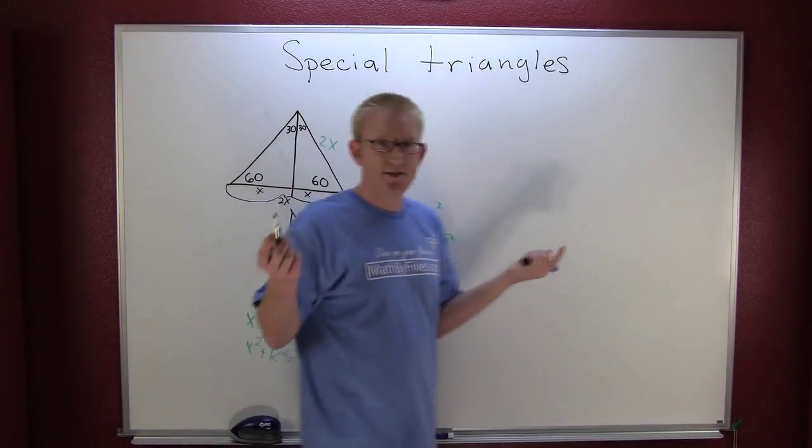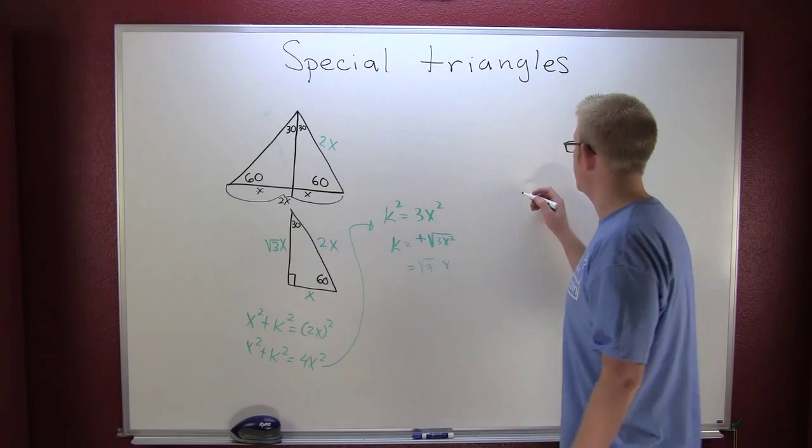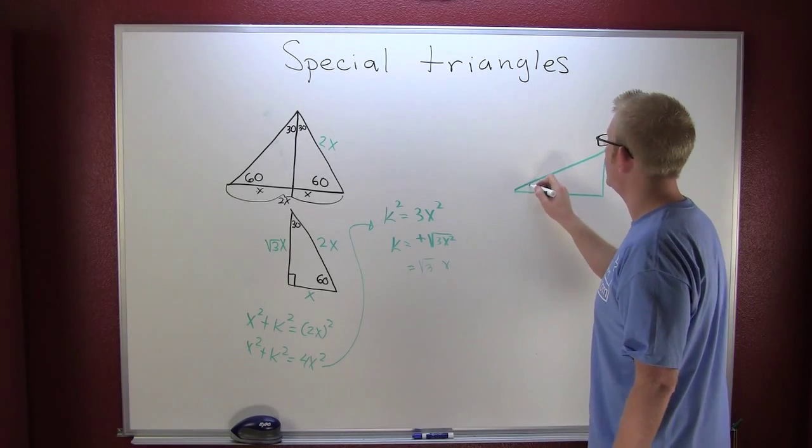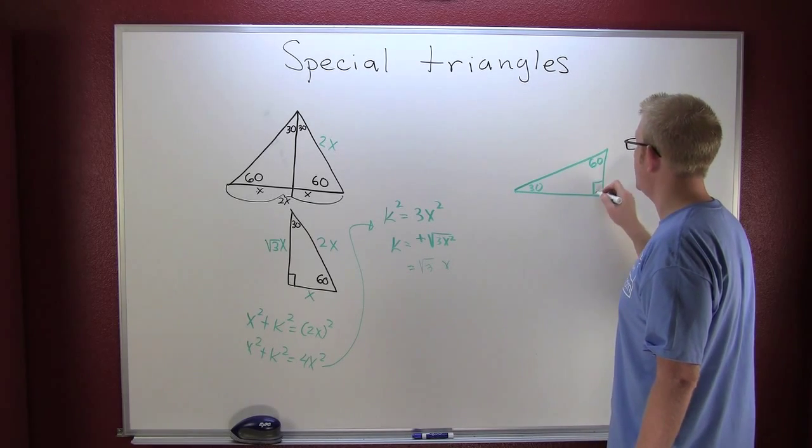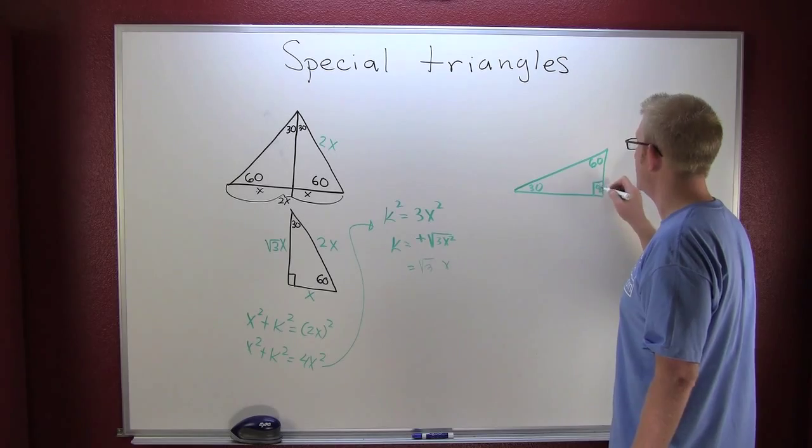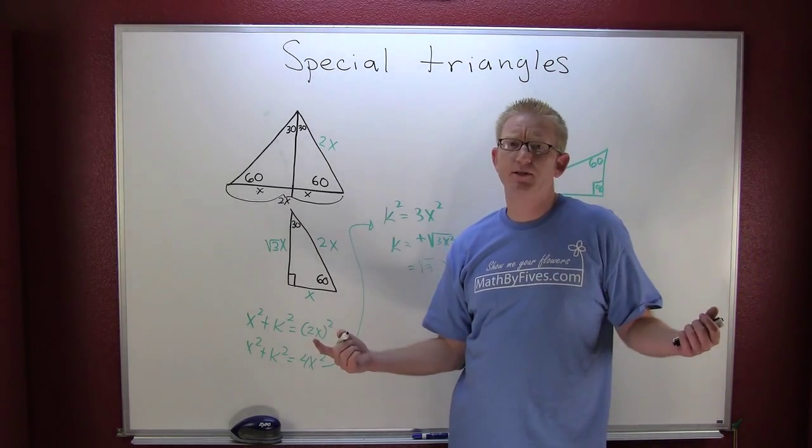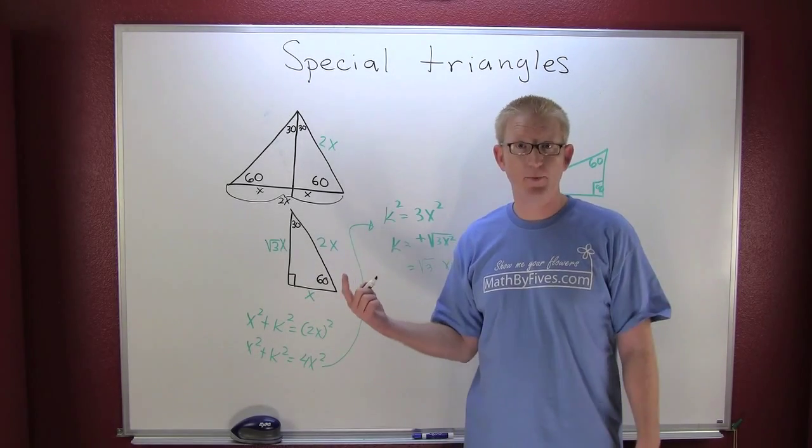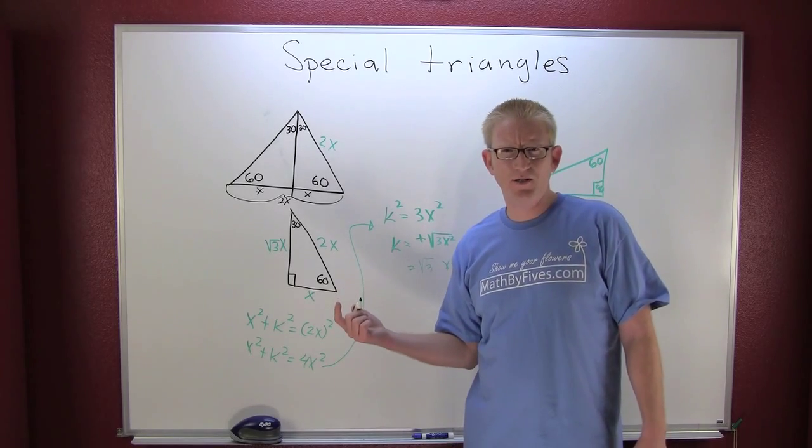So instead of k being here I'm going to replace it with root 3x. So now if I had this 30-60-90 triangle in any persuasion, why don't I lay it flat with this being my 30, this being my 60, and this being my 90. What if they told you one of the sides? Okay the hypotenuse, and what do you want the hypotenuse to be? Really 21?